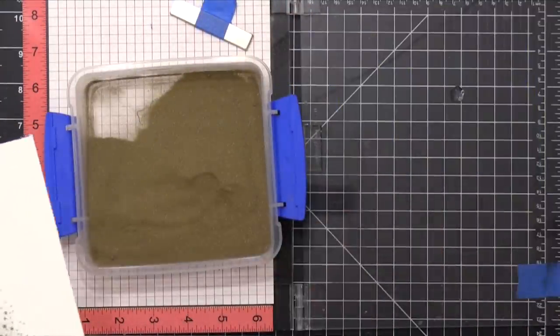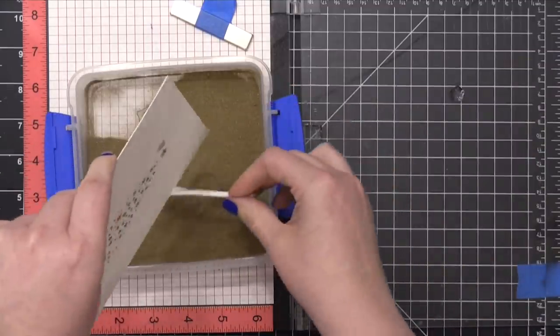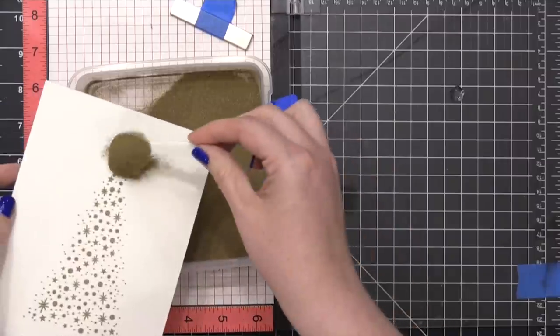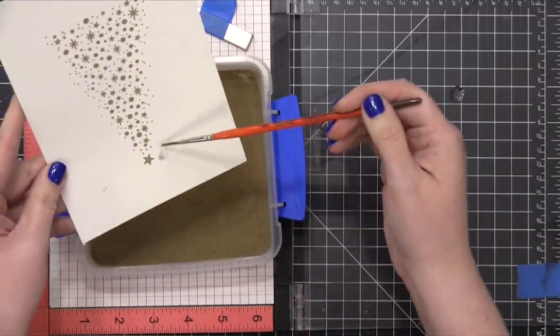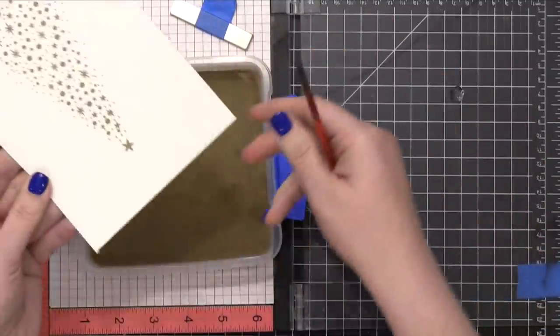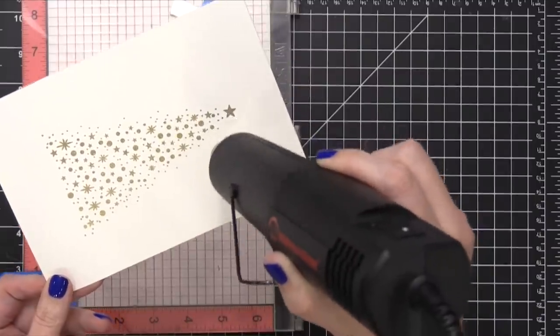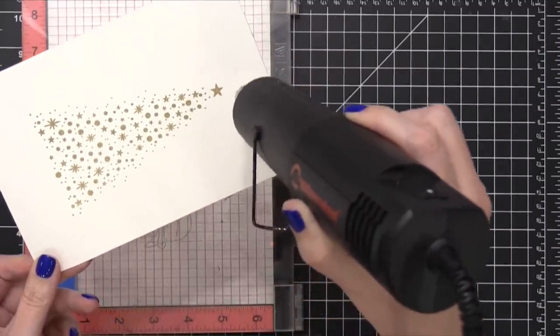I'm going to add more of that embossing powder. What happened this time is I think I put my fingerprint just right next to that star when I was placing it onto the watercolor paper, so I had some embossing powder that stuck to it. I just took a dry paint brush and brushed that away. Then used my heat tool to heat set this until it was completely smooth and melted.